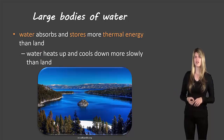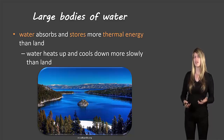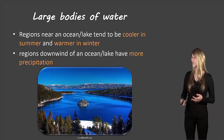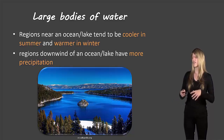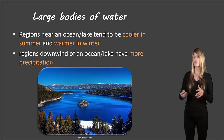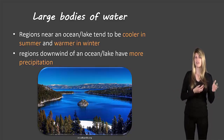Large bodies of water can absorb and store more thermal energy than land can, so water heats up more slowly and cools down more slowly than land. This means that if you're near an ocean or a lake, that region will be warmer in the winter and cooler in the summer. Also, regions that are downwind of that water will get a lot more precipitation.